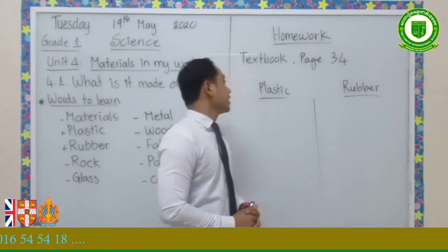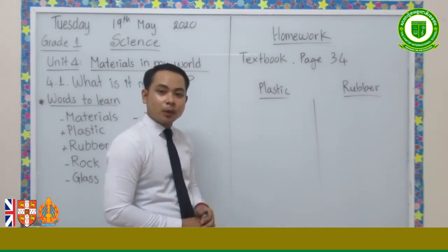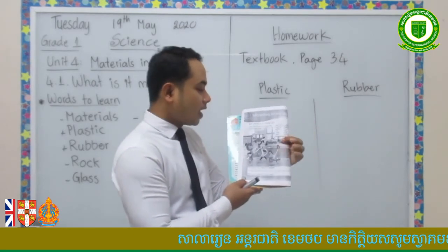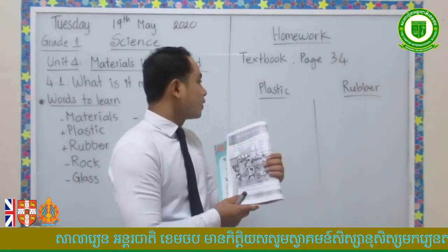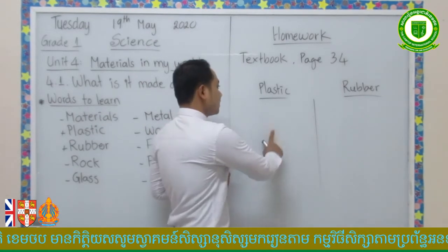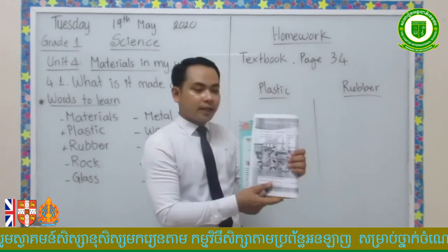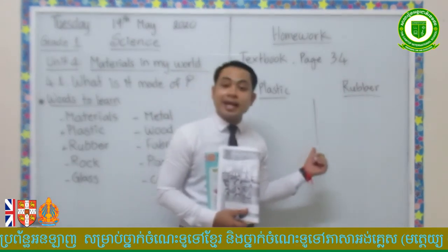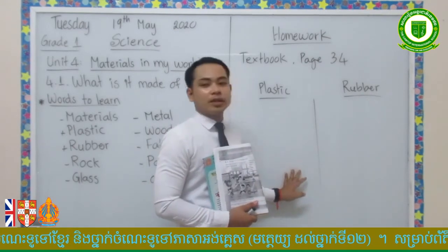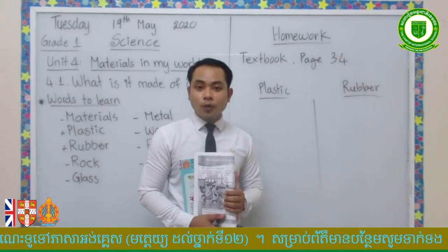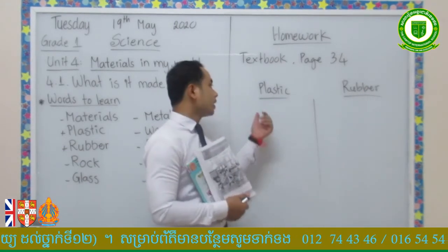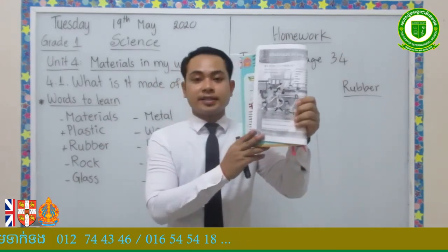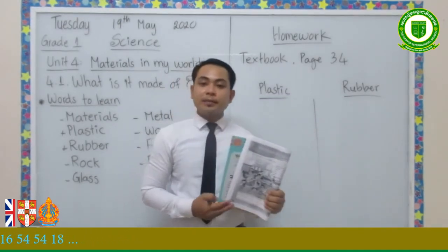Now for our homework: go to your textbook, page 34. You will see a lot of pictures there — a lot of materials in the playground. I want you to write down some materials that are made of plastic and the materials that are made of rubber. Try to find them in the picture and write the answers in your notebook. When you are done, send it to me anytime before next week's lesson starts. Don't forget — your homework is on page 34: find materials made of plastic and materials made of rubber.